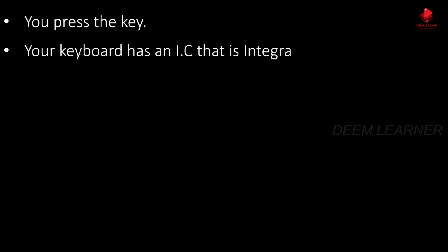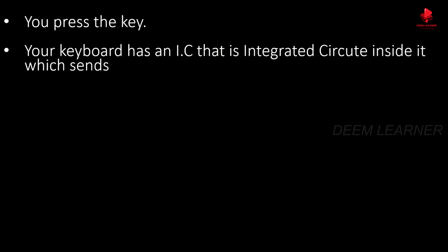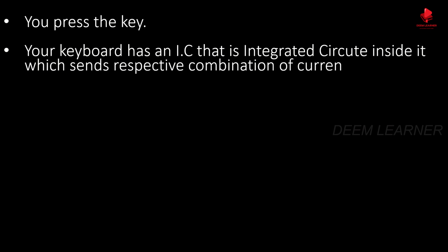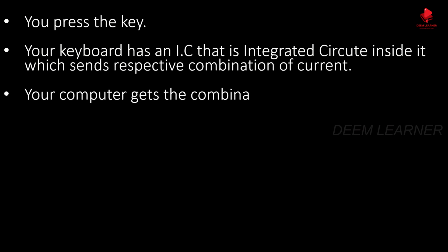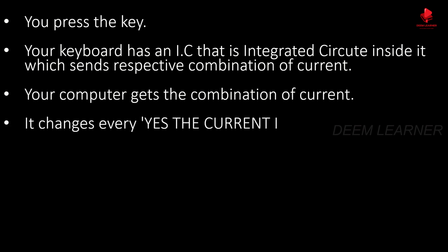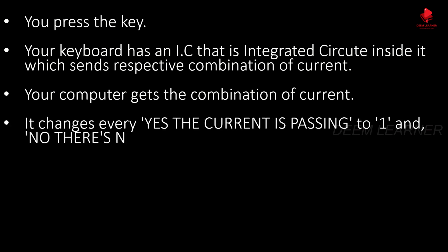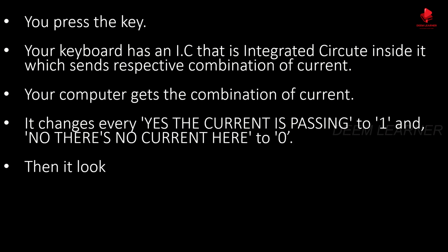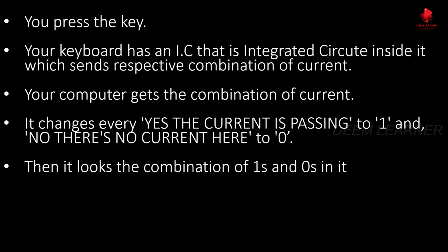In case you're still confused, here's the summary: when you press a key, your keyboard has an IC — an integrated circuit — inside it, which sends the respective combination of current. Your computer gets the combination of current, changes every 'yes, current is passing' to one and every 'no, there's no current' to zero. Then it looks up the combination of ones and zeros in its dictionary.